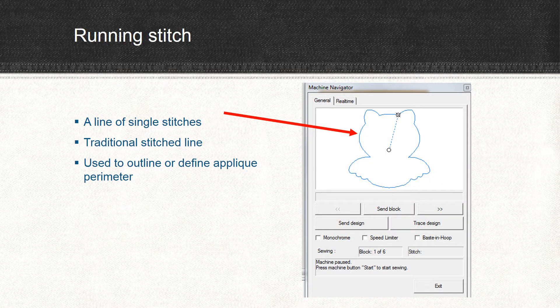A running stitch is the same sort of stitch as an outline stitch — it's a line of single stitches that looks just like stitching on a regular machine as opposed to an embroidery machine. It's used to outline or define the perimeter of an applique. You can choose to have a running stitch or a jump stitch between blocks when digitizing, and it's all up to you depending on the design.